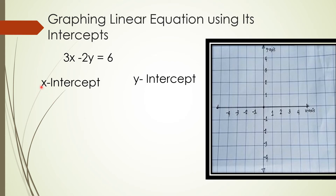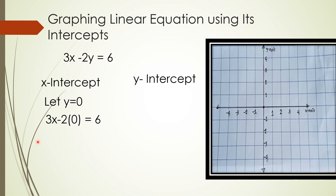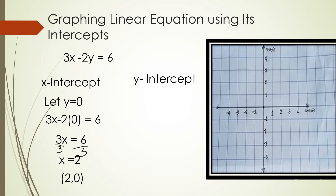To find the x-intercept, let y equal 0 and substitute: 3x minus 2 times 0 equals 6, so 3x equals 6. Dividing both sides by 3, x equals 2. The x-intercept point is (2, 0).